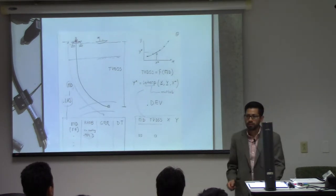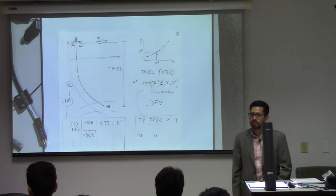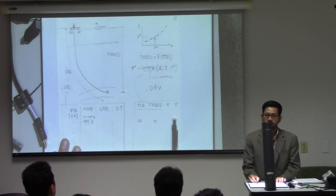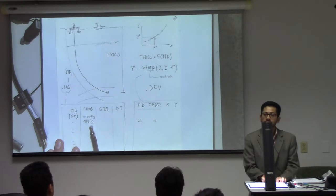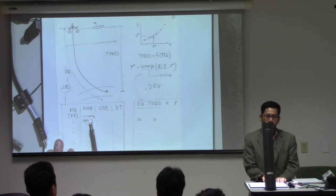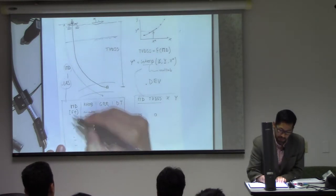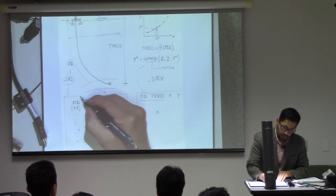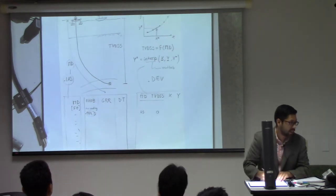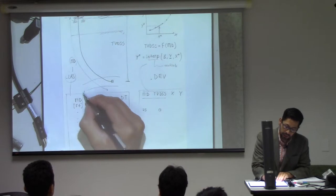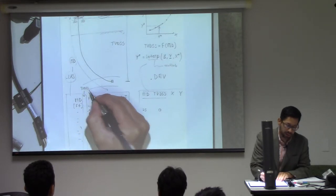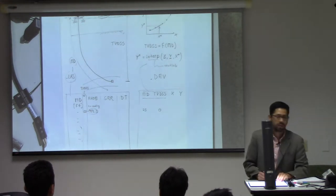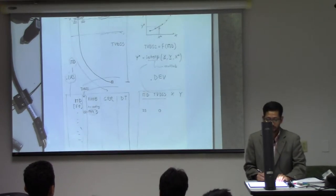Student question: 'Are you just finding the true vertical depth that goes with the measured depth in the LAS file?' Yes. Why do you want to do that? Because in the deviation file you don't have densities, but in the LAS file you do have densities. So once you know the density and the true vertical depth, you add a new TVD column to the LAS file — and from that column you compute your delta Z.